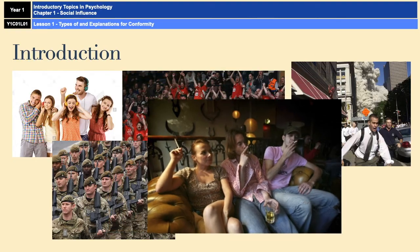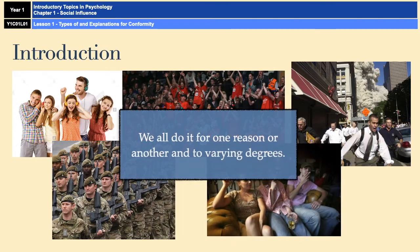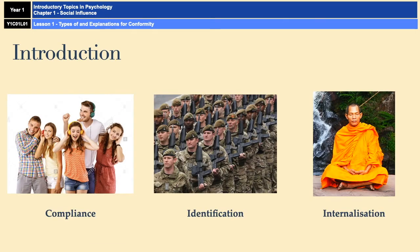We all do it for one reason or another and to varying degrees. It doesn't have to necessarily be a bad thing, but we have all done it at some point. There are three different types of conformity that you need to be aware of for A-level psychology: compliance, identification, and internalisation.